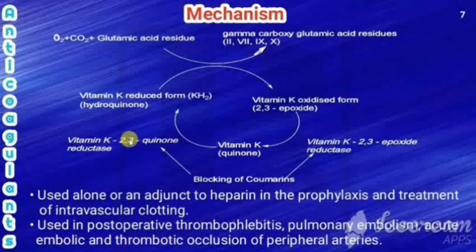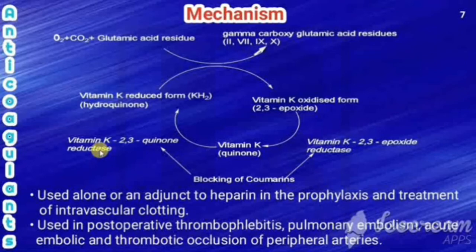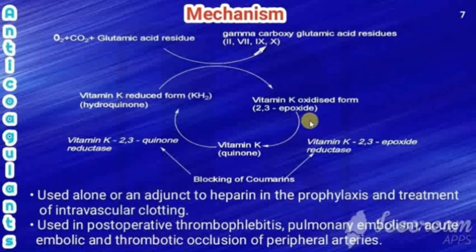Two enzymes are involved in this cyclic process: vitamin K 2,3-quinone reductase and vitamin K 2,3-epoxide reductase. Coumarins block both of these enzymes. When blocked, the conversion to the reduced form of vitamin K is prevented, so the gamma-carboxyglutamic acid residues are not produced. Since vitamin K is essential for coagulation, blocking these two enzymes blocks vitamin K synthesis and the drug acts as an anticoagulant.